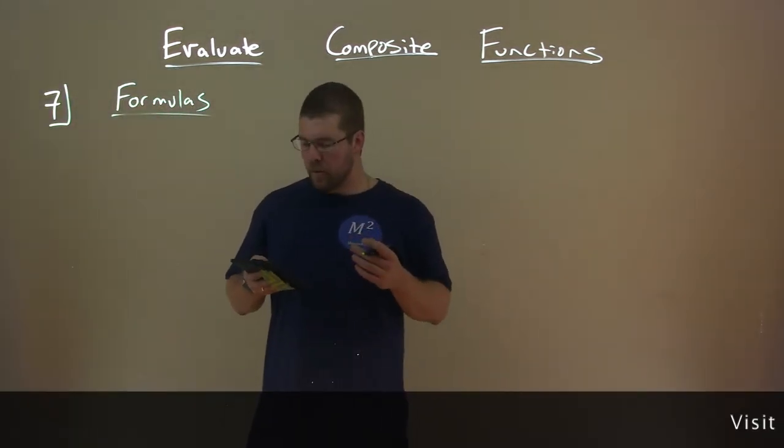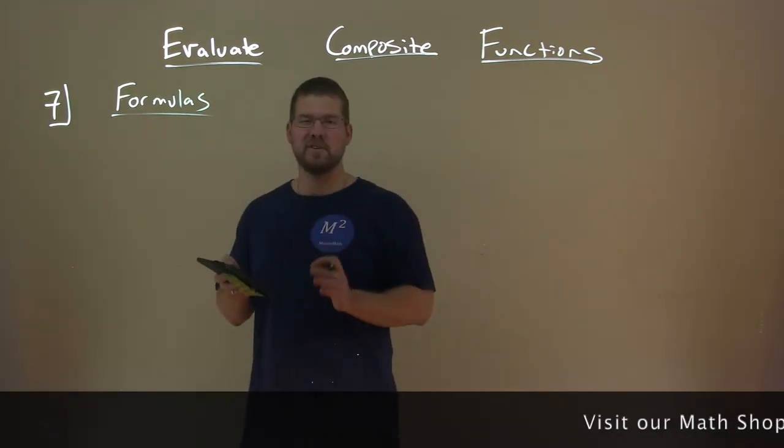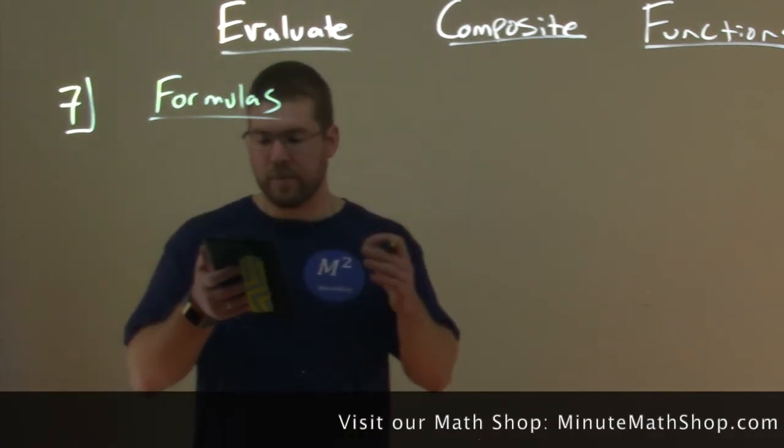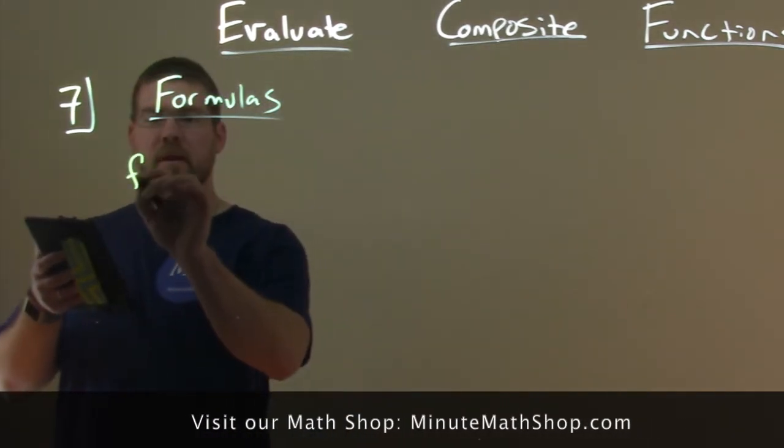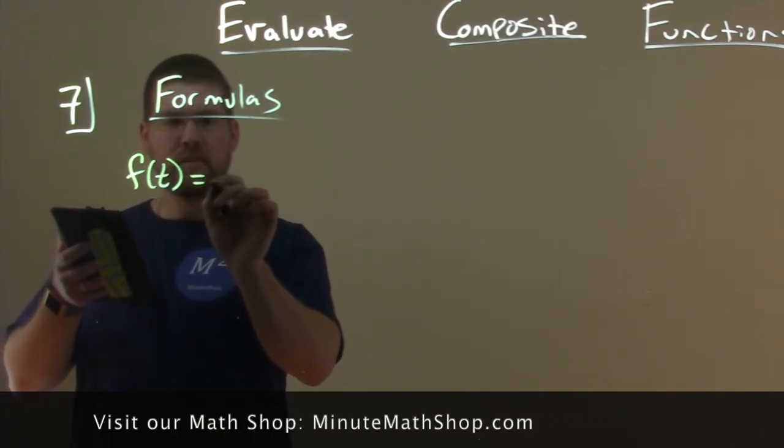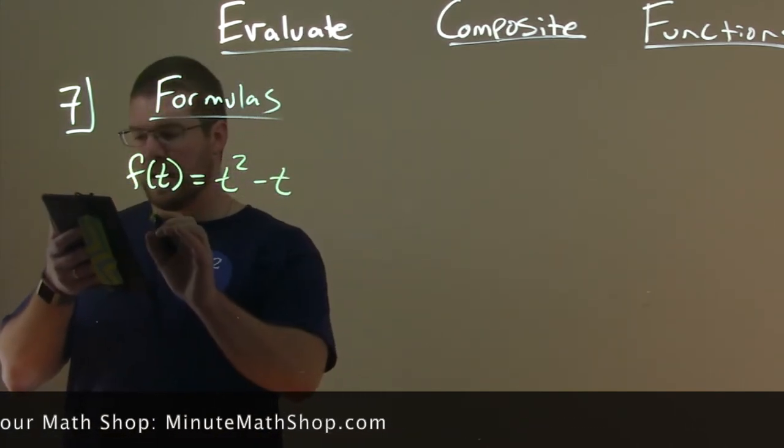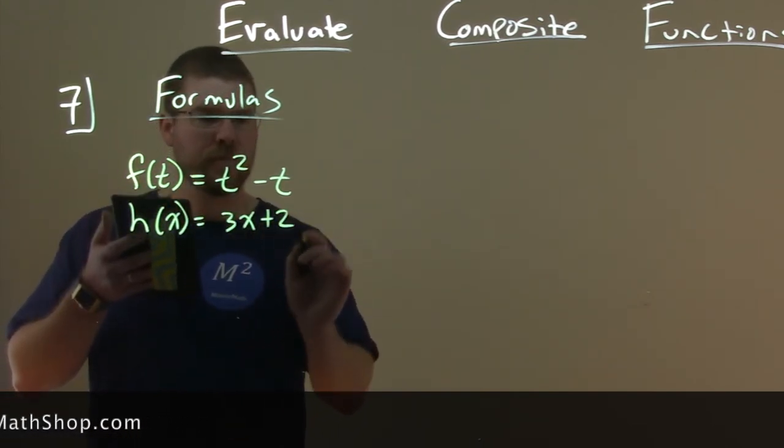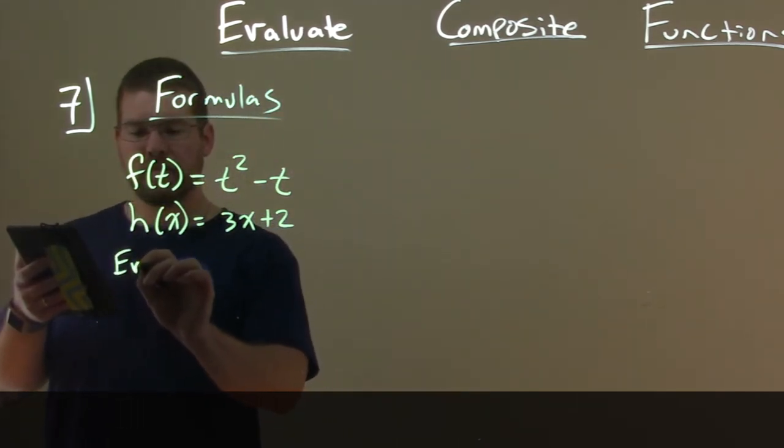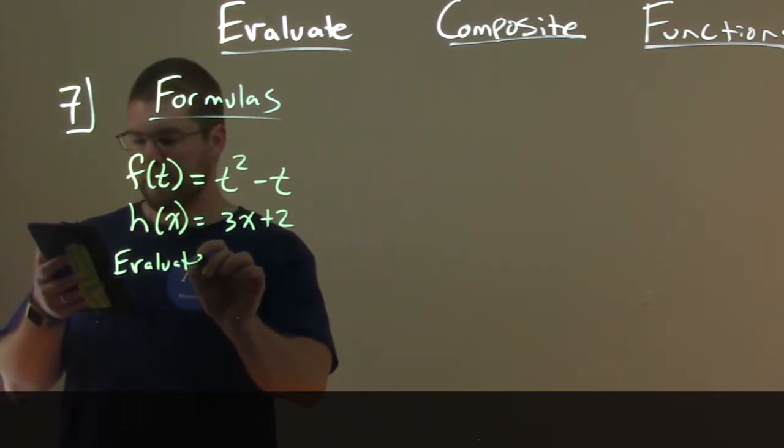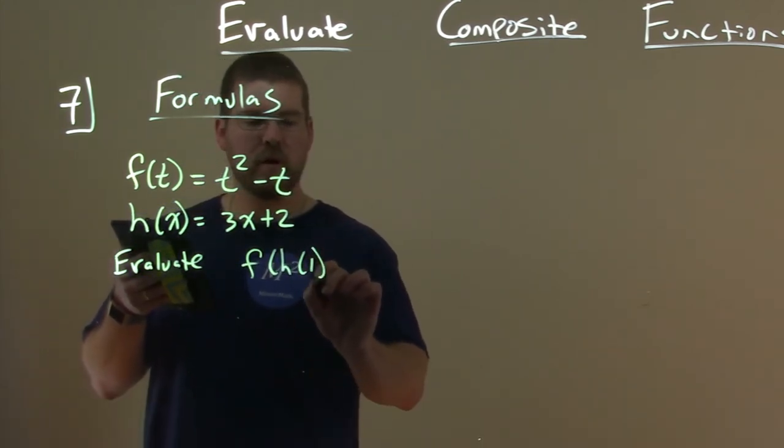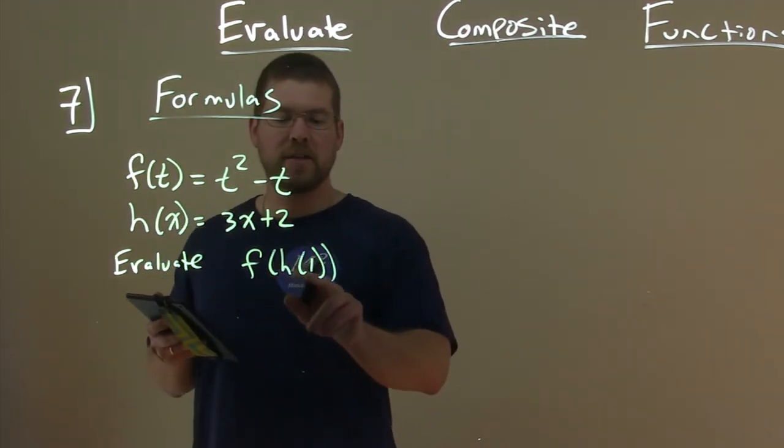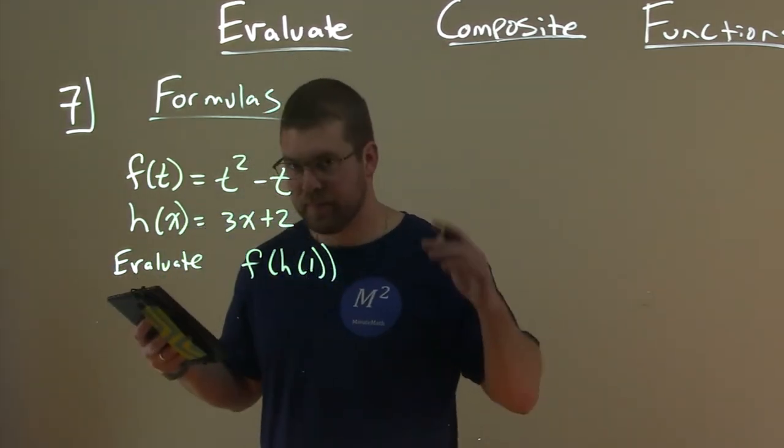All right, so now what we're going to do is evaluate composite functions using formulas. So we're going to evaluate composite functions expressed as formulas with a numerical input here. We're given f of t is equal to t squared minus t, and h of x is equal to 3x plus 2. And we're going to find, evaluate, what is f of h of 1.